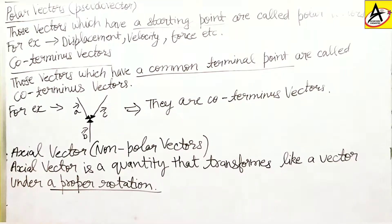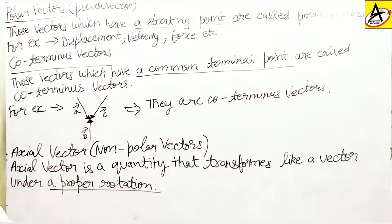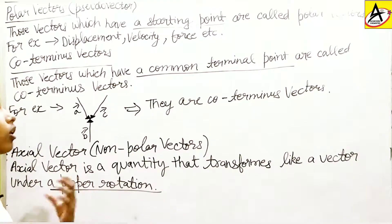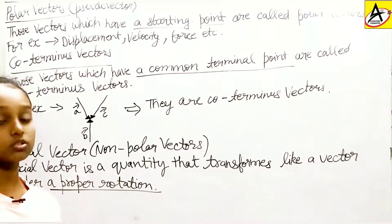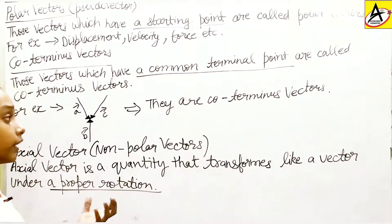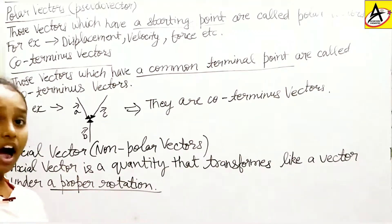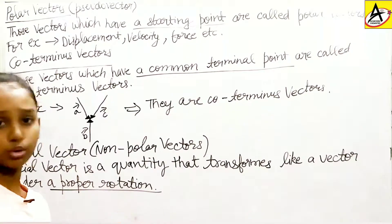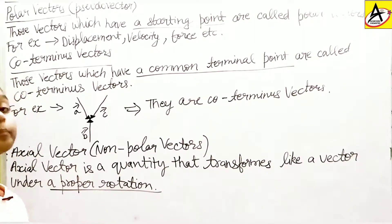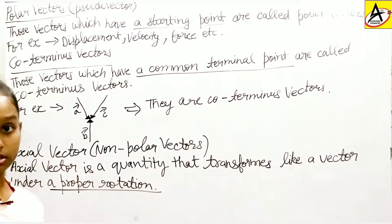Actually, an axial vector is a vector which represents rotational effects and acts along the axis of rotation. Those are called axial vectors.